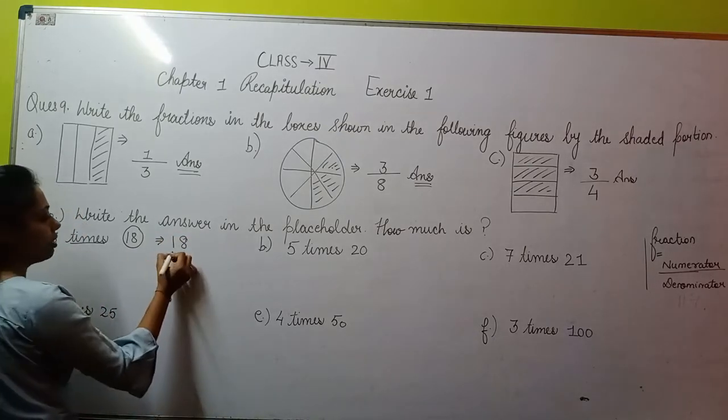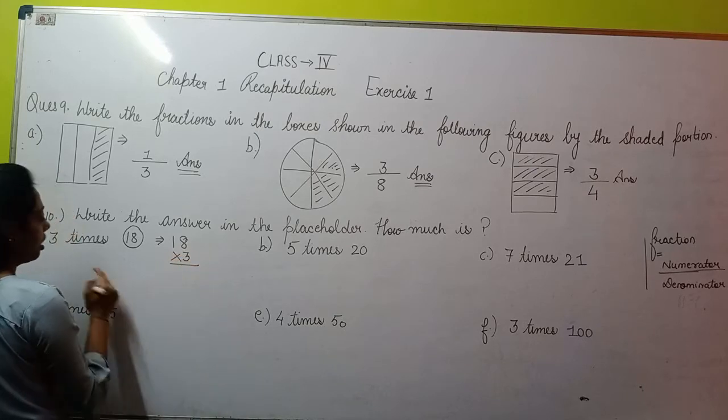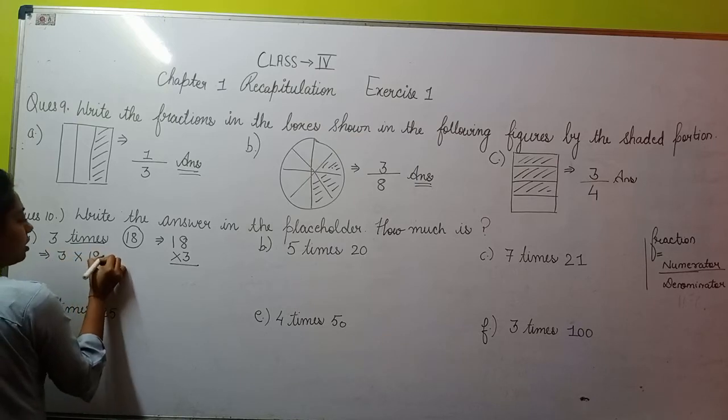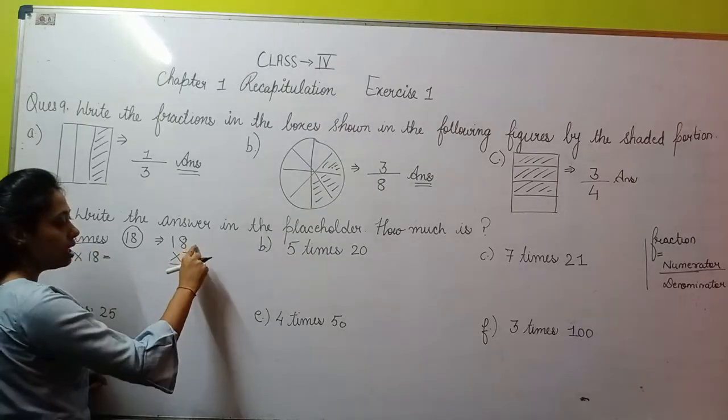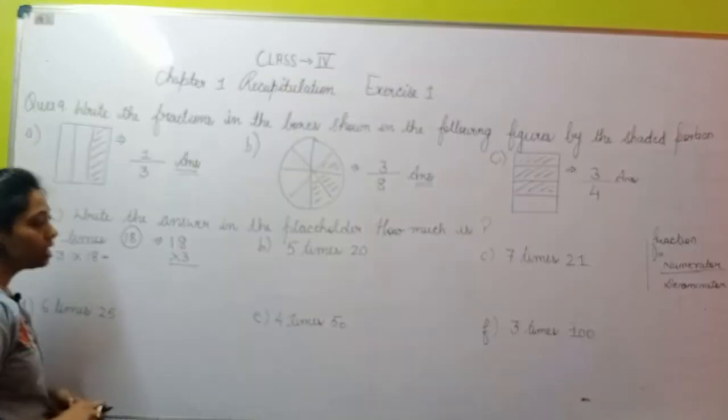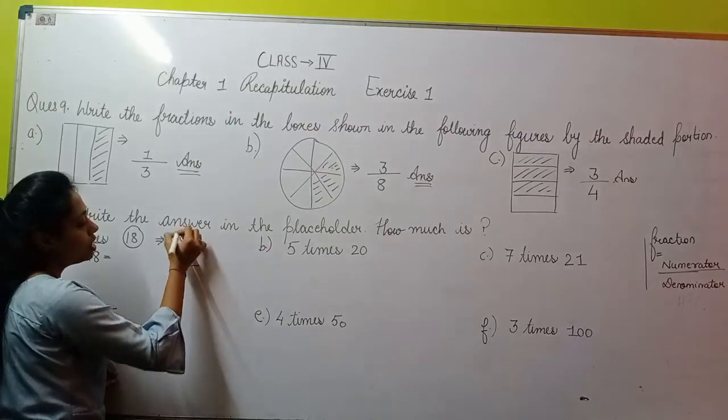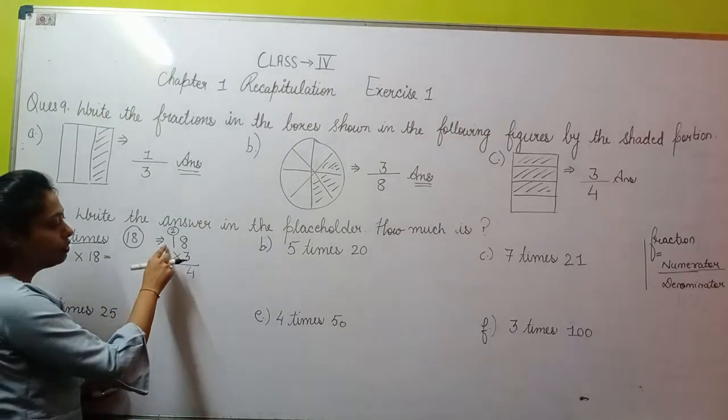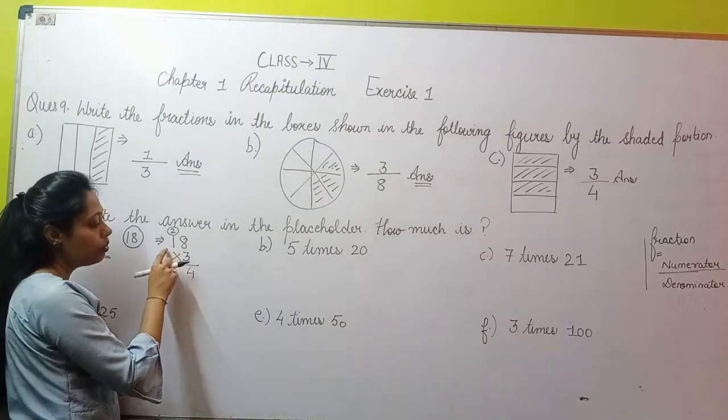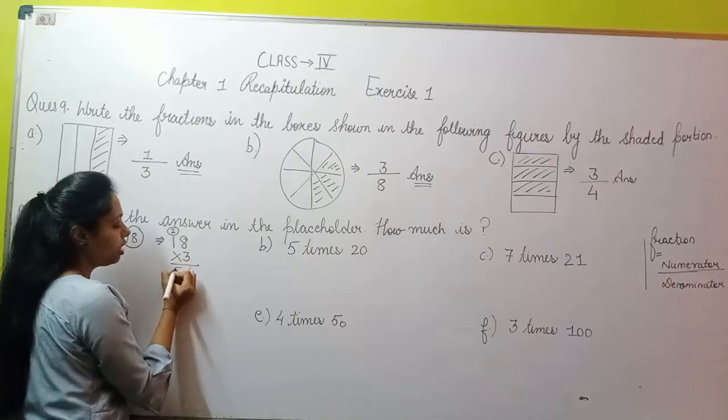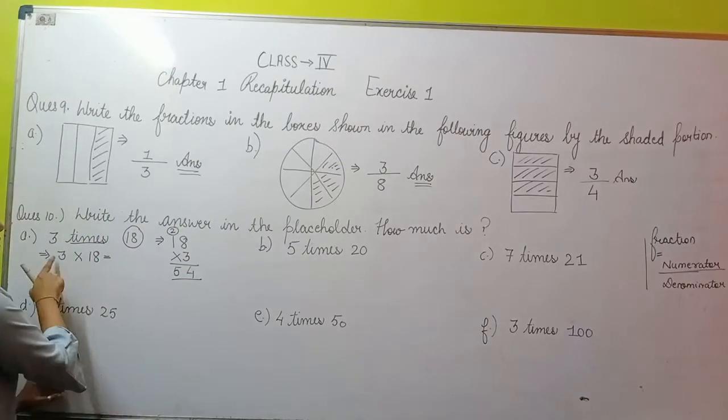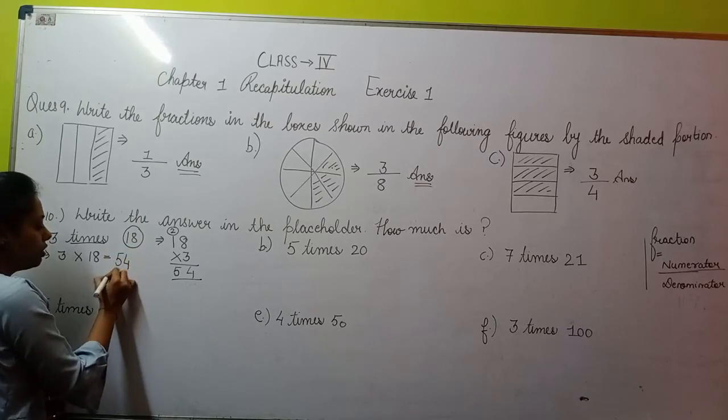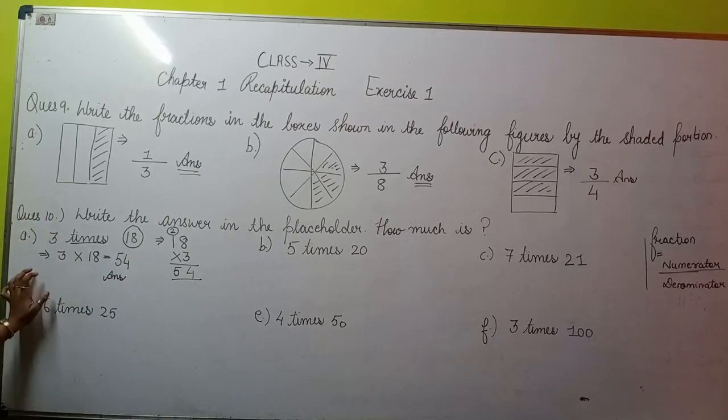18 multiply by 3. You can also write it like this: 3 multiply by 18. Now how to get the answer? Write it like this: 8 threes are 24. You'll write 4 here and carry forward the 2. Then in the ones place, 1 three is 3, plus 2 is 5. So 54 is your answer. That means 3 into 18, or 3 times 18, or 3 multiply by 18 gives you 54.